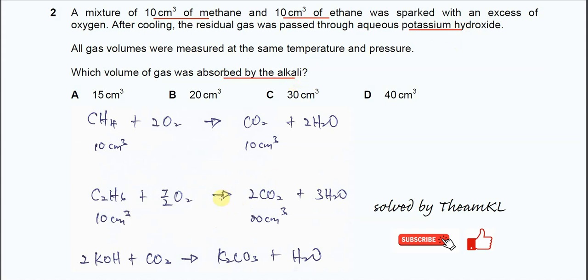First you need to know the reaction: potassium hydroxide reacts with CO2 to form potassium carbonate and H2O. The CO2 will be absorbed by the potassium hydroxide, and from this reaction mixture we need to find out how much CO2 is being absorbed.